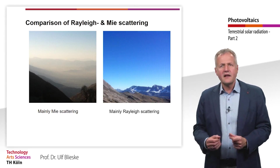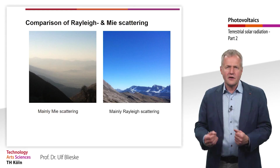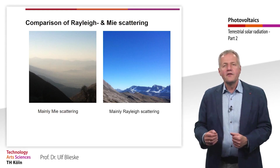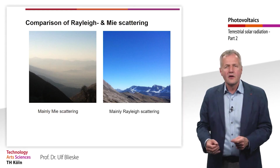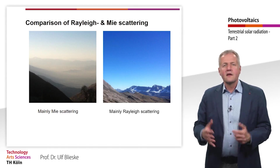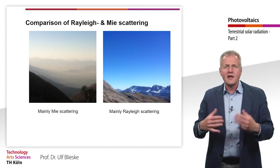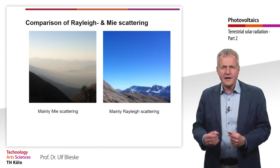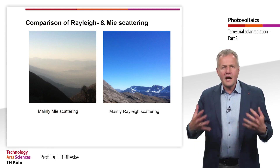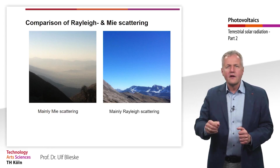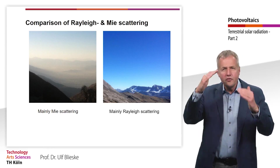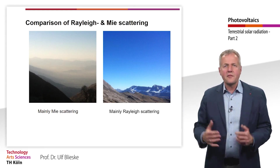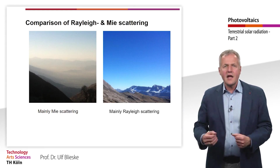The picture on the right was taken a few hours later, around noon, at an altitude of 4,600 meters above sea level, viewing the Andes in Bolivia near Cochabamba. Under these circumstances, the sunlight travels only a short distance through the atmosphere. As the dominant process is Rayleigh scattering, the sky appears dark blue. Towards the horizon, however, with increasing inclination, more Mie scattering is visible as light travels a longer distance through the atmosphere, and the sky appears more white-blue.